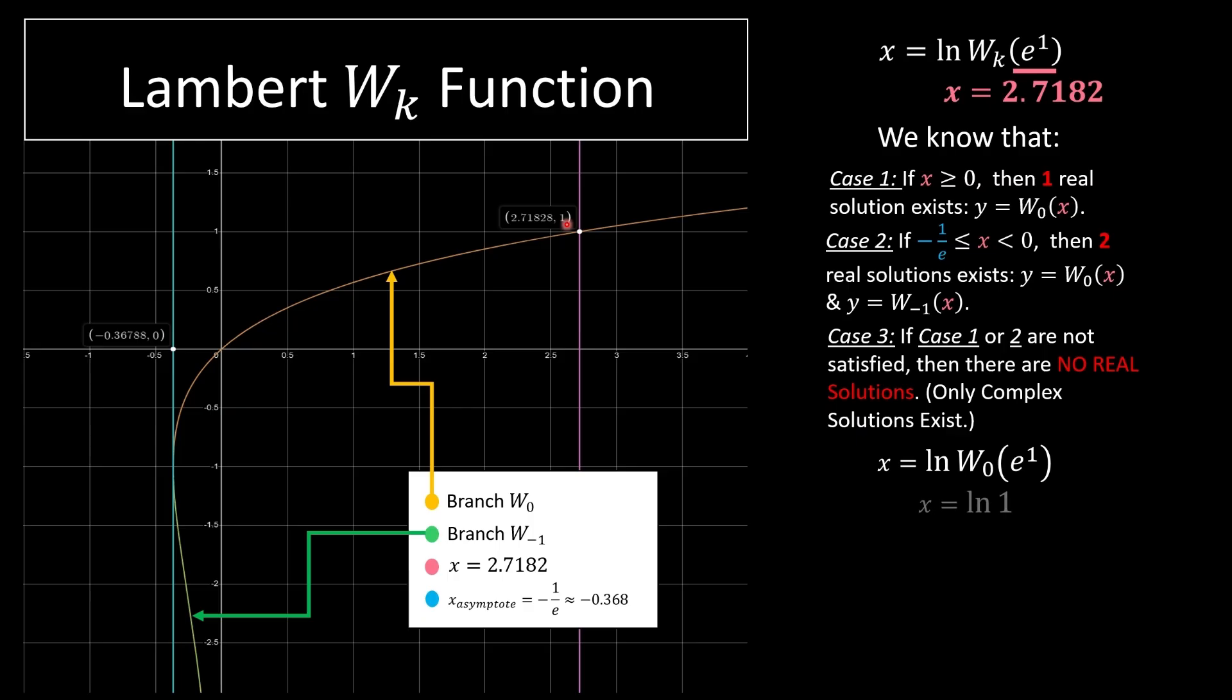So by looking at the graph, we get the value 1. Then we do ln of 1, which ln of 1 is 0. And that's the answer to this problem.